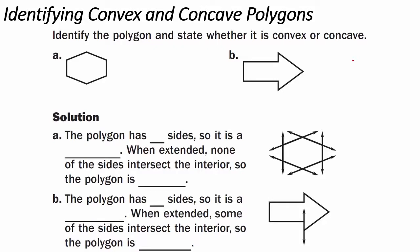Example two: identifying convex and concave polygons. We identify the polygon and state whether it is convex or concave. Figure A has six sides, so it is a hexagon. When you extend the lines, none of its sides intersect the interior, so the polygon is convex. Figure B has seven sides, so it is a heptagon. When you extend, some of the sides intersect the interior, so the polygon is concave.